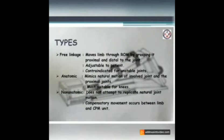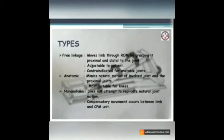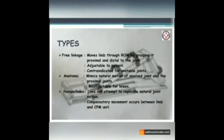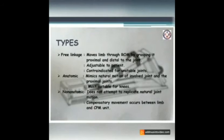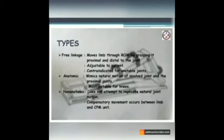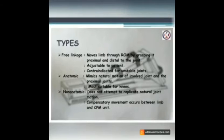There are three types of CPM: free linkage, anatomic, and non-anatomic. In free linkage, the limb moves by grasping the joint proximally and distally through the range of motion. It is adjustable for patients but contraindicated for unstable joints.